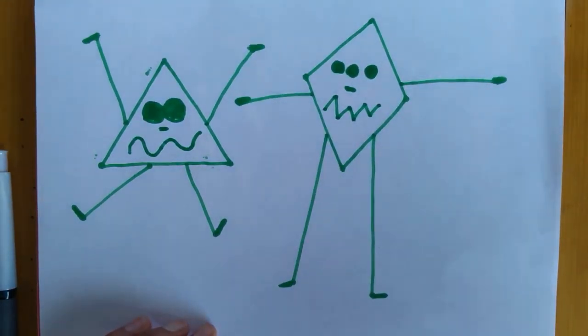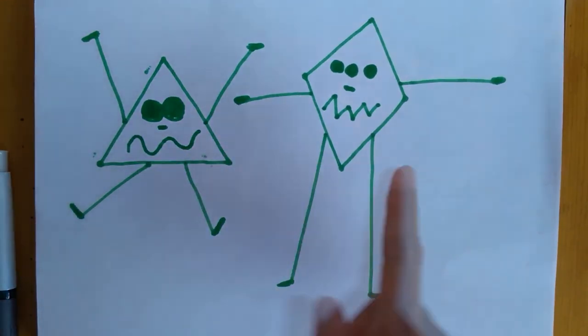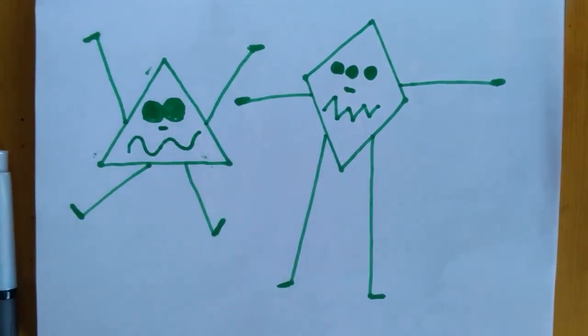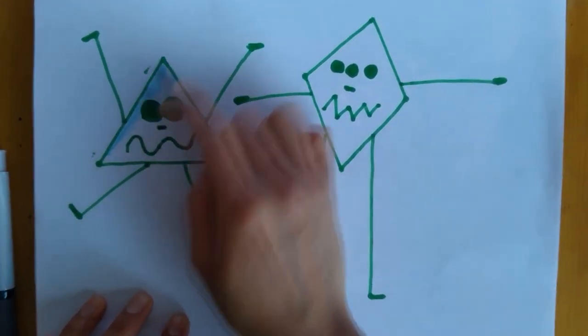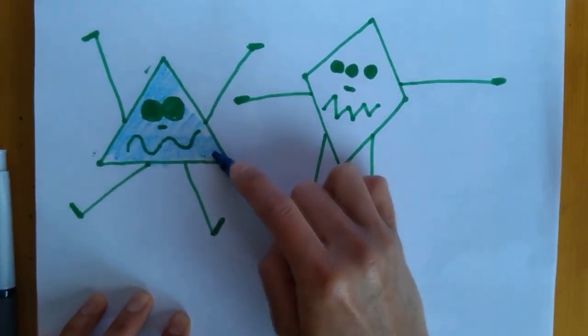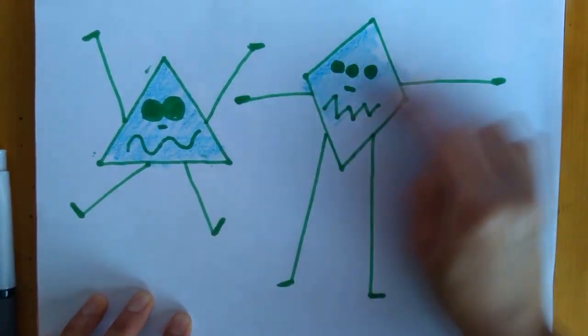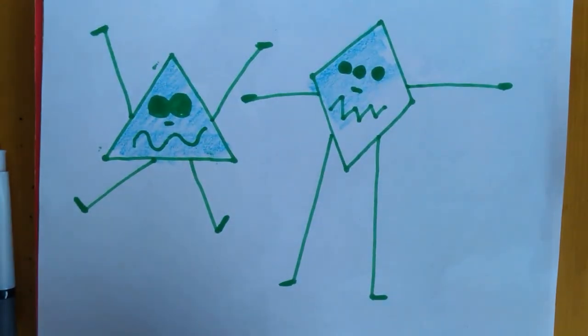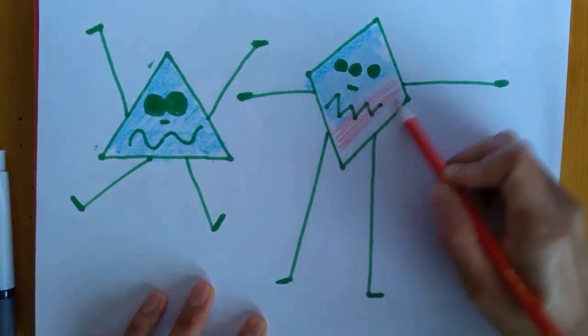All right. Here's my monster. Triangle monster and a diamond monster. You could even color them in if you have colors. I'm gonna color mine blue. This guy blue too. Maybe I'll do some red. Blue and red.